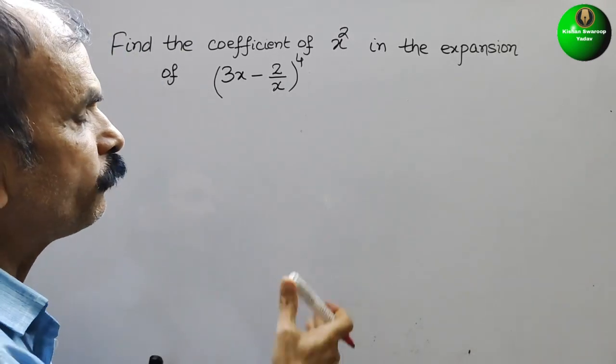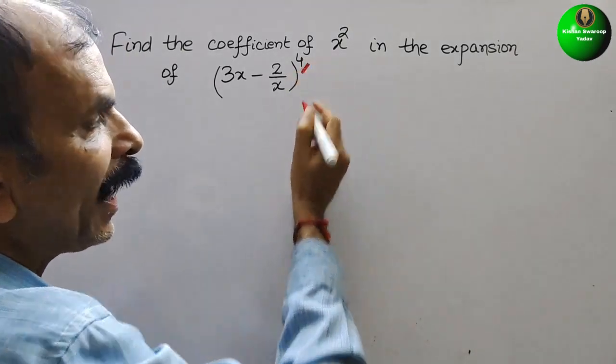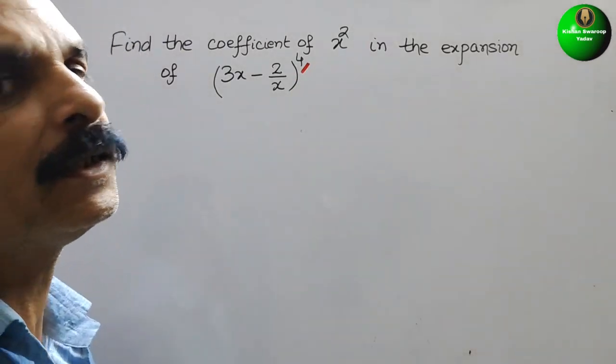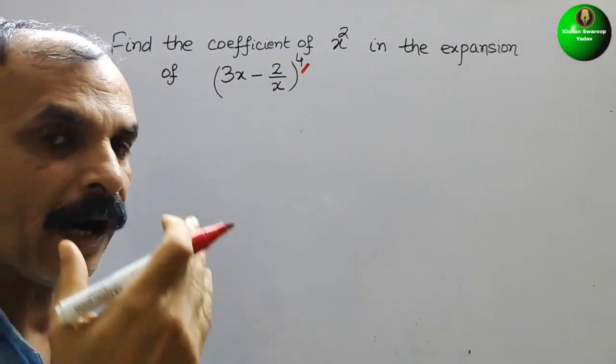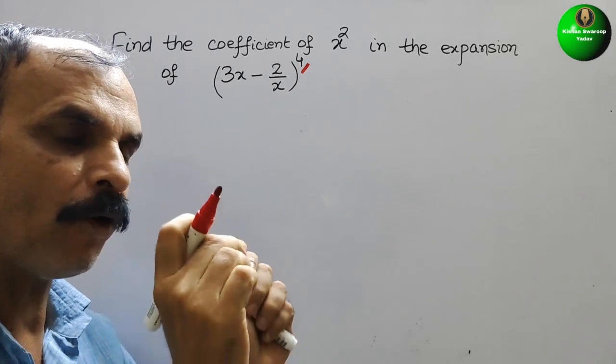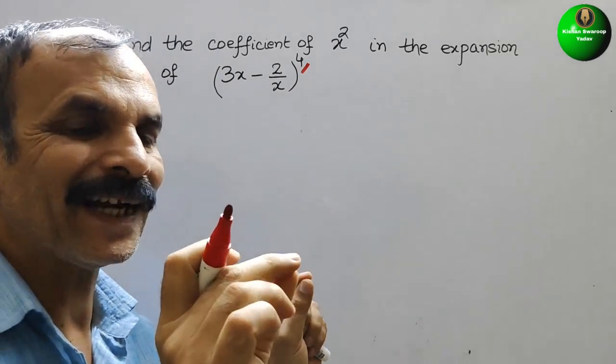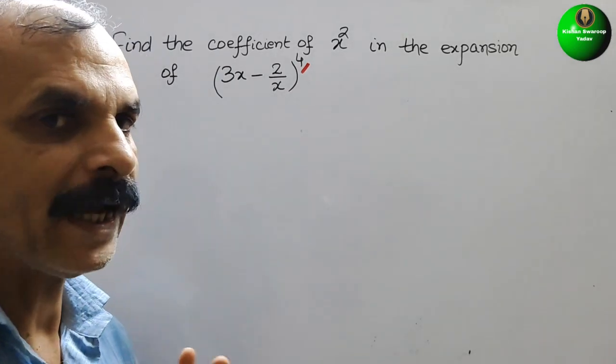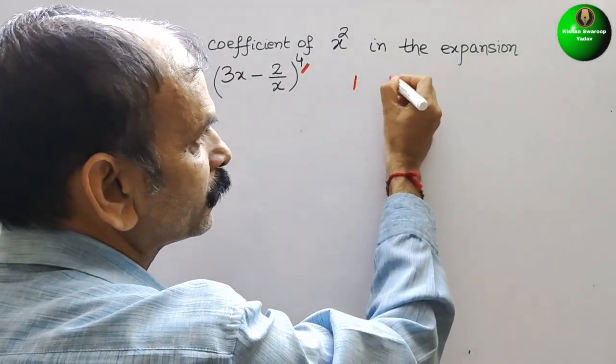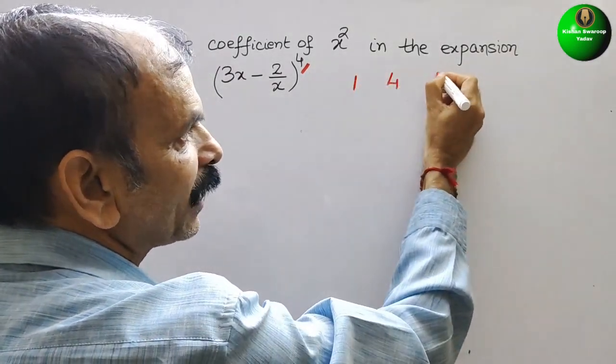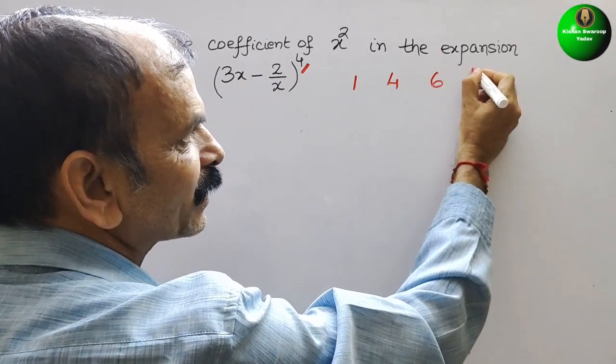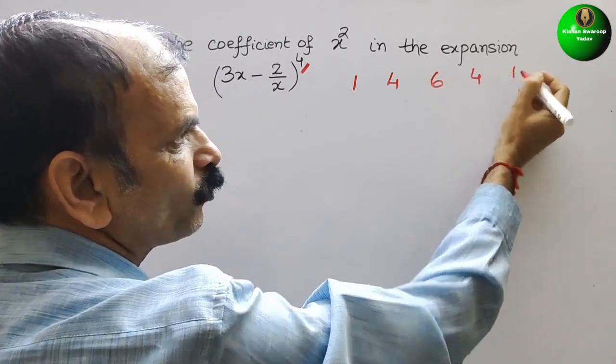If you see, first we know what are the initial coefficients of the power 4 with the help of Pascal's triangle. That is nothing but: 1, second is 4, third is 6, next comes 4, next comes 1.